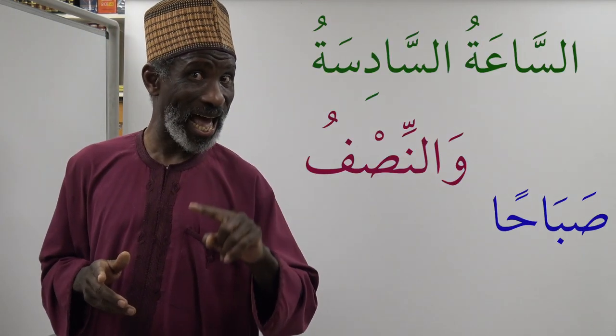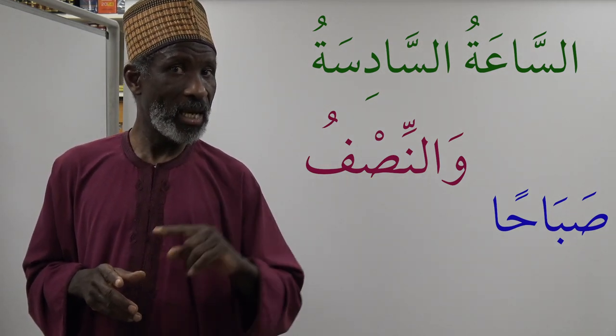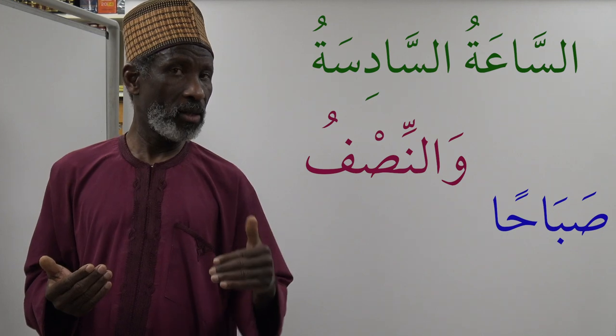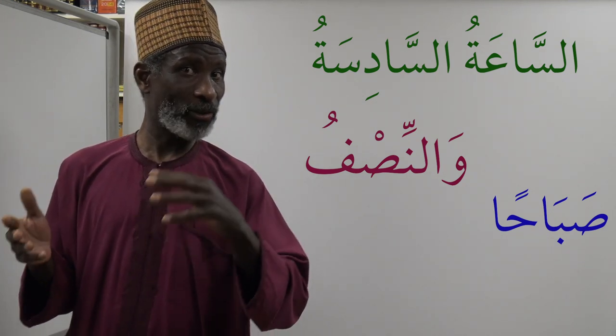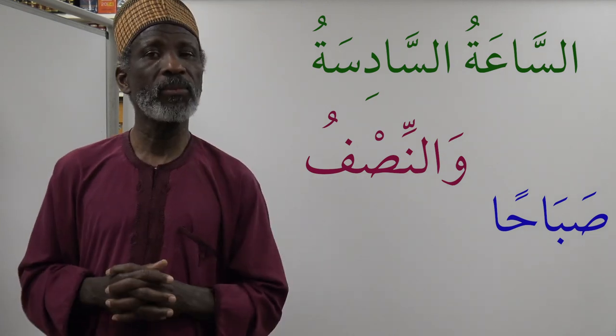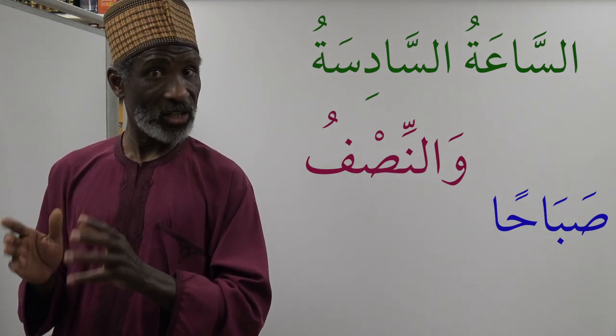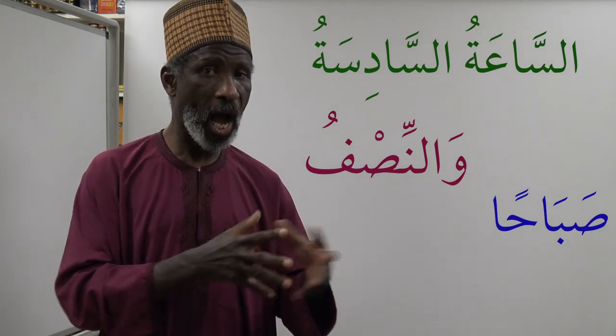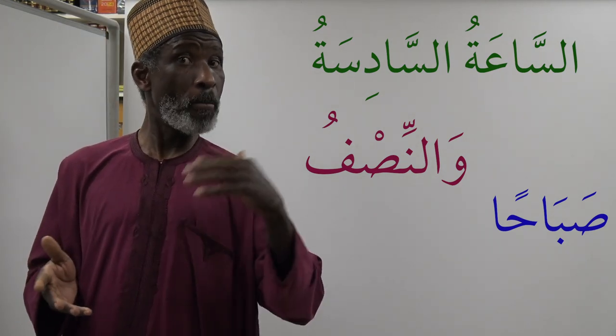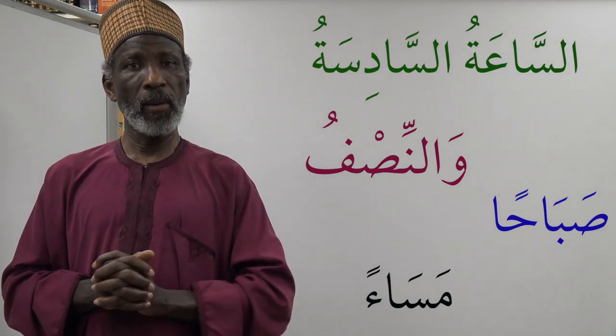Now let's use the vocabulary we've established. For half past, how do you say 'half past six in the morning'? You say 'assa'atu al sadisatu wa nisfun sobahan.' 'Wa nisfun' means 'and a half,' so that gives you 'half past six.' You can also say 'assa'atu al sadisatu wa nisfun masa'an' for 'half past six in the evening.'